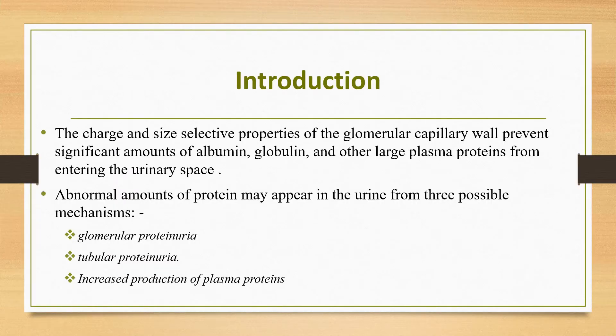The charge and size selective properties of the glomerular capillary wall prevent significant amounts of albumin, globulin, and other large plasma proteins from entering the urinary space. Smaller proteins — that means low molecular weight proteins — do cross the capillary wall, but they are reabsorbed by the proximal tubule. A very small amount of protein that normally appears in the urine is the result of normal tubular secretion.